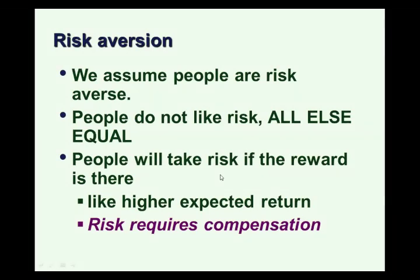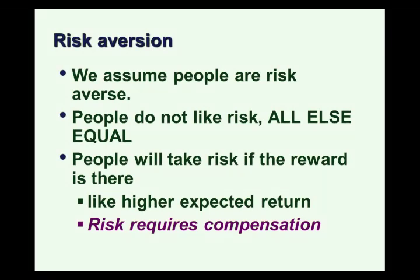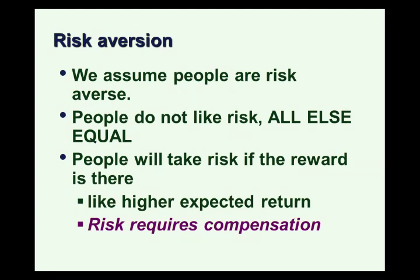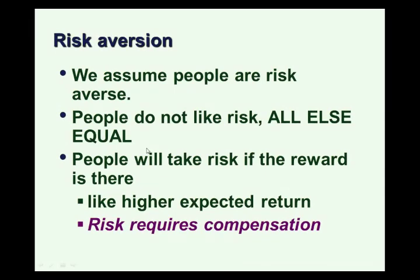Risk aversion is alternatively described as: risk requires compensation. Investors take on additional risk — additional uncertainty over their actual returns — if they're compensated by a higher expected return. If they expect that in the long run they might be better off by taking the risk, then they'll take the risk.